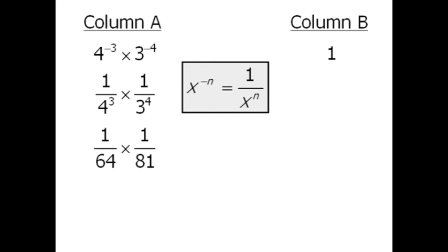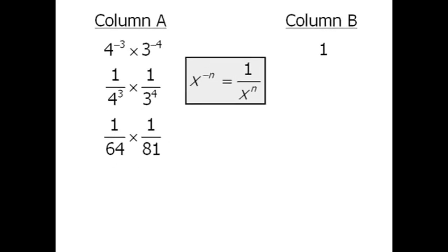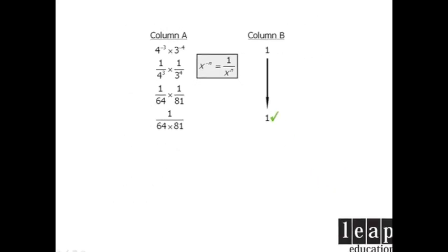We multiply numerator times numerator and denominator times denominator. When we compare this with column B, we can see that column B must be greater, in which case our answer is B.